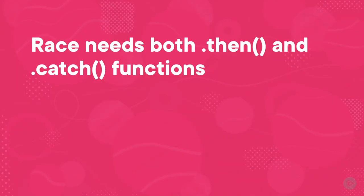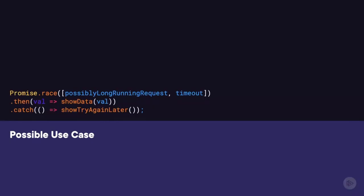That means when you use race you definitely need to handle both the then and catch functions. If the first promise to settle is successful, it'll call then. If the first promise to settle fails, it'll call catch. As mentioned at the start of the clip, this could be useful to put a timeout on one of your requests — if the possibly long-running request succeeds, it'll call the then block and show user data. However, if the timeout promise completes first, it will throw an error and the catch block will be displayed with a message like 'there's an issue with your request, please try again later.'